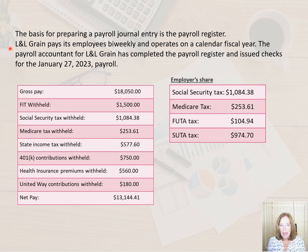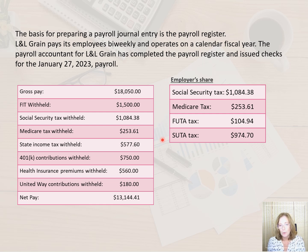In our example, the payroll accountant for L&L Grain has completed the payroll register and issued checks for the January 27, 2023 payroll. We can see gross pay of $18,050 as well as withholdings for federal income tax, social security, Medicare, and state income tax, as well as deductions for 401k contributions, health insurance premiums, and donations. In addition, we see the net pay and the employer's share of the taxes. This is the information we need to record the payroll journal entry.